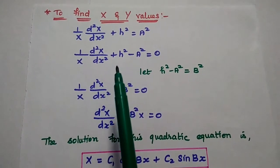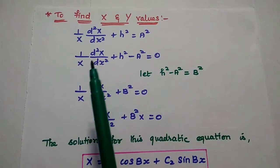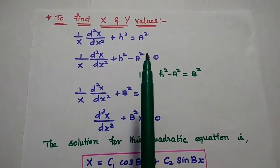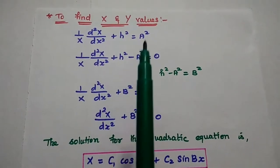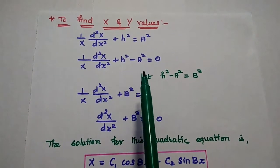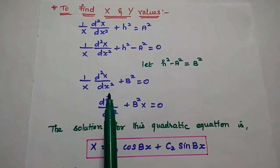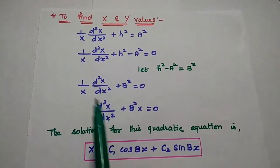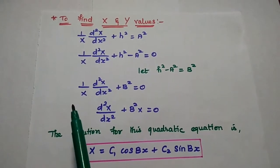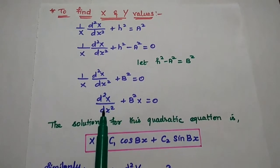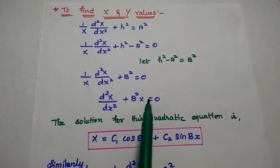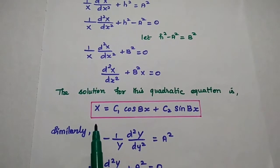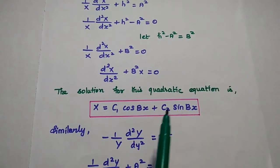Next we find the values of X and Y. Considering the x term alone from the second equation: 1/X d squared X by dx squared plus h squared is equal to a squared. Moving a squared to the left side and considering h squared minus a squared as b squared, this equation becomes 1/X d squared X by dx squared plus b squared is equal to 0. Taking 1/X as common and moving the term to the right-hand side: d squared X by dx squared plus b squared X is equal to 0. The solution for this equation is X equals c1 cos bx plus c2 sin bx.